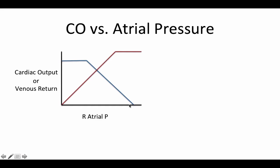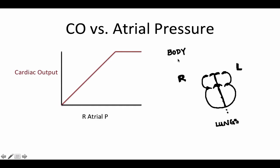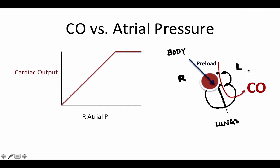Now let's go back to the actual cardiac and vascular function curves, just looking at the red line, which represents your cardiac output versus your right atrial pressure. We just said that the more preload there is, the more your heart will pump out. Your preload is the blood volume that's going in. That goes to your lungs, which then comes back around to the left side of the heart and is pumped out to your body — that is known as your cardiac output. So as you increase this preload or increase your right atrial pressure, this increased preload is going to cause increased cardiac output, meaning increased blood coming in causes increased blood coming out.